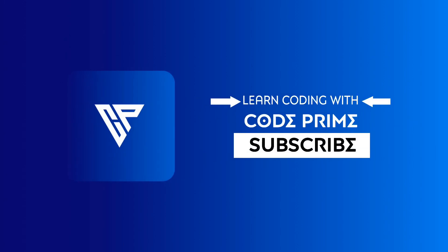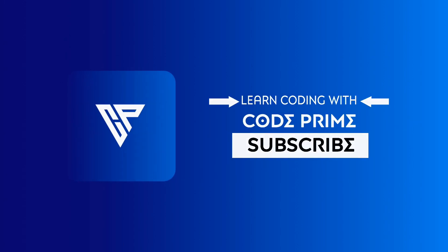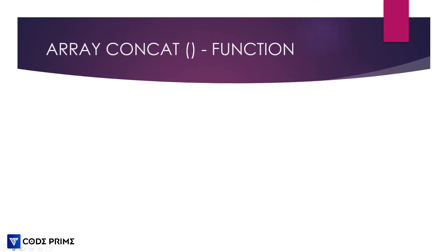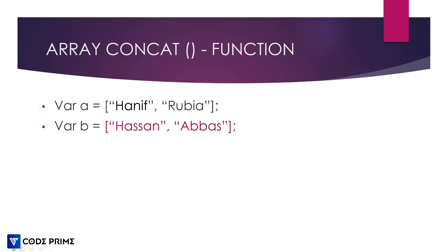First we're going to learn about the array concat function and how it works. The concat function is used to join two arrays or elements. It can join two arrays together, or join strings, numbers, and whatever elements we have in that array.